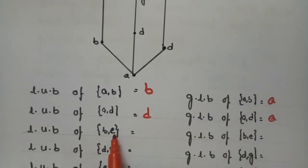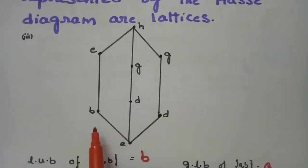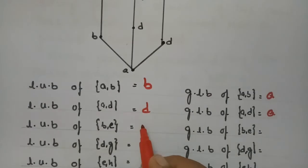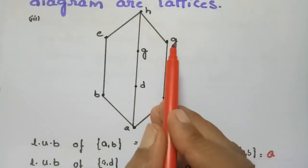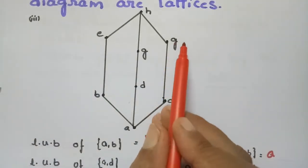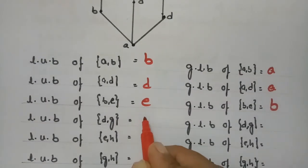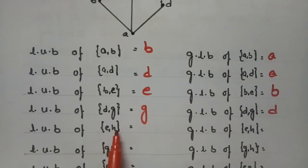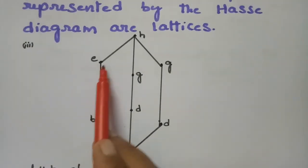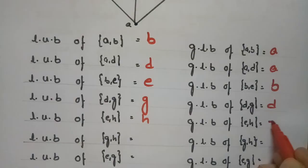Coming to (b, c): the upper bound is e and the lower bound is b. Coming to (d, g): the upper bound is g and the lower bound is d. Coming to (e, h): the upper bound is h and the lower bound is e. Coming to (g, h): the upper bound is h and the lower bound is g.